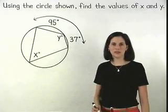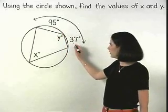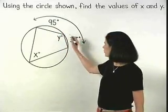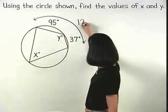Since we're given that the two parts of this arc measure 95 and 37 degrees, then the full arc measures 95 plus 37, or 132 degrees.